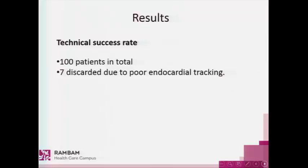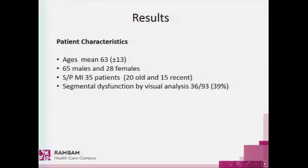Out of 100 patients, 7 were discarded because of poor endocardial tracking. The mean age was 63, with 65 males and 28 females. 35 patients were post-MI, 15 of them recent MIs, and 36 patients — approximately 40% — had significant dysfunction by visual analysis.